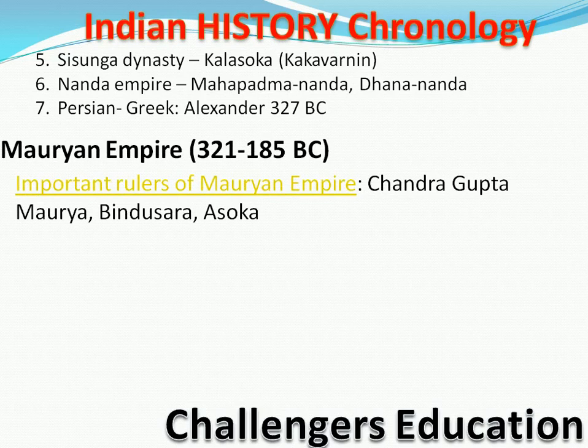Yeh sab Before Christ chal rahe hain — jab abhi tak Isa Masih ka janam nahi hua tha. Isme jo hamare important Mauryan rulers the woh hain — Chandragupta Maurya, Bindusara, aur Ashoka. Ashoka ke baad ke rulers itne capable nahi the ki woh unki legacy continue rakh paate, to Mauryan Empire decline ho gaya. Ashoka is very important. Iske baad aayega post-Maurian kingdom, jise hum middle kingdom bhi kehte hain.